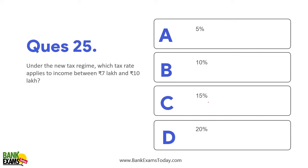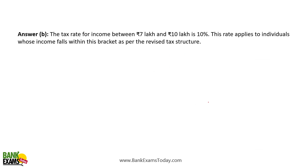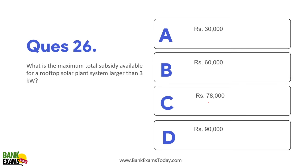Under the new tax regime, which tax rate applies to income between ₹7 and ₹10 lakhs? 10%. What is the total subsidy available for a rooftop solar plant system larger than 3 kilowatts? The maximum ₹78,000 rupees subsidy can be availed under the scheme.